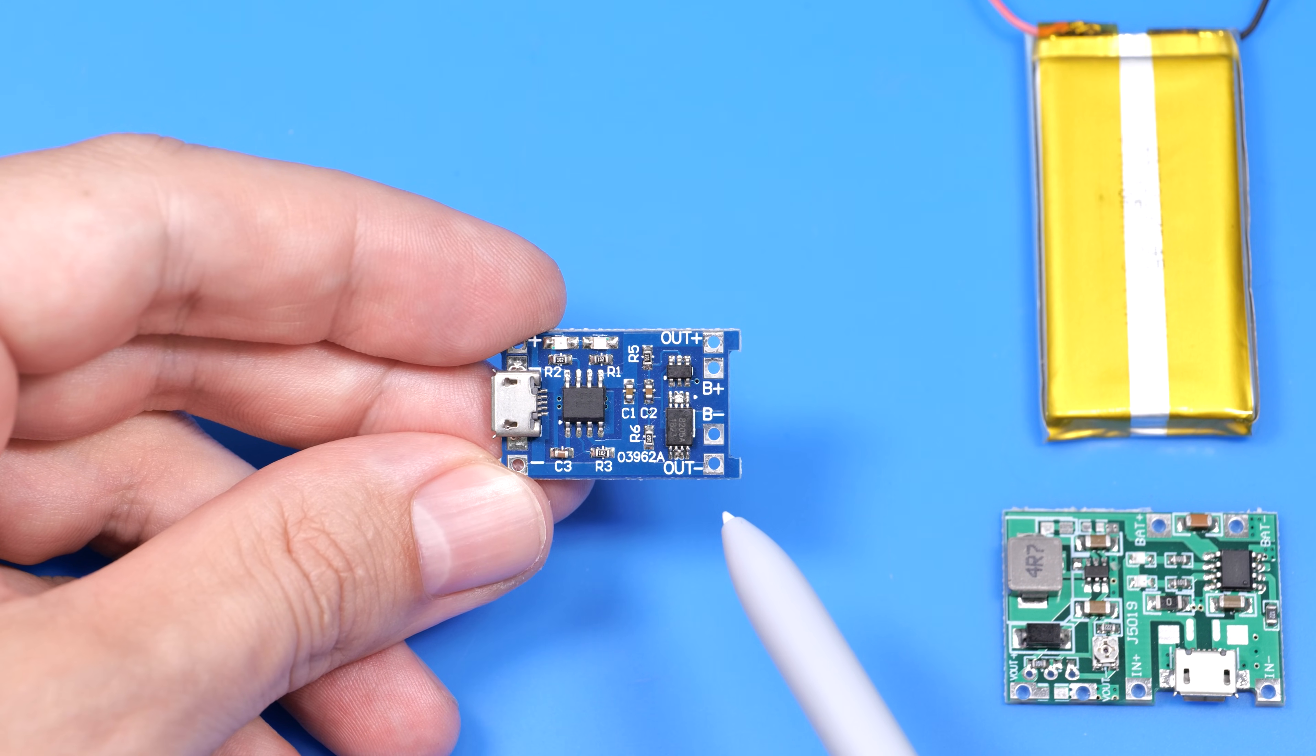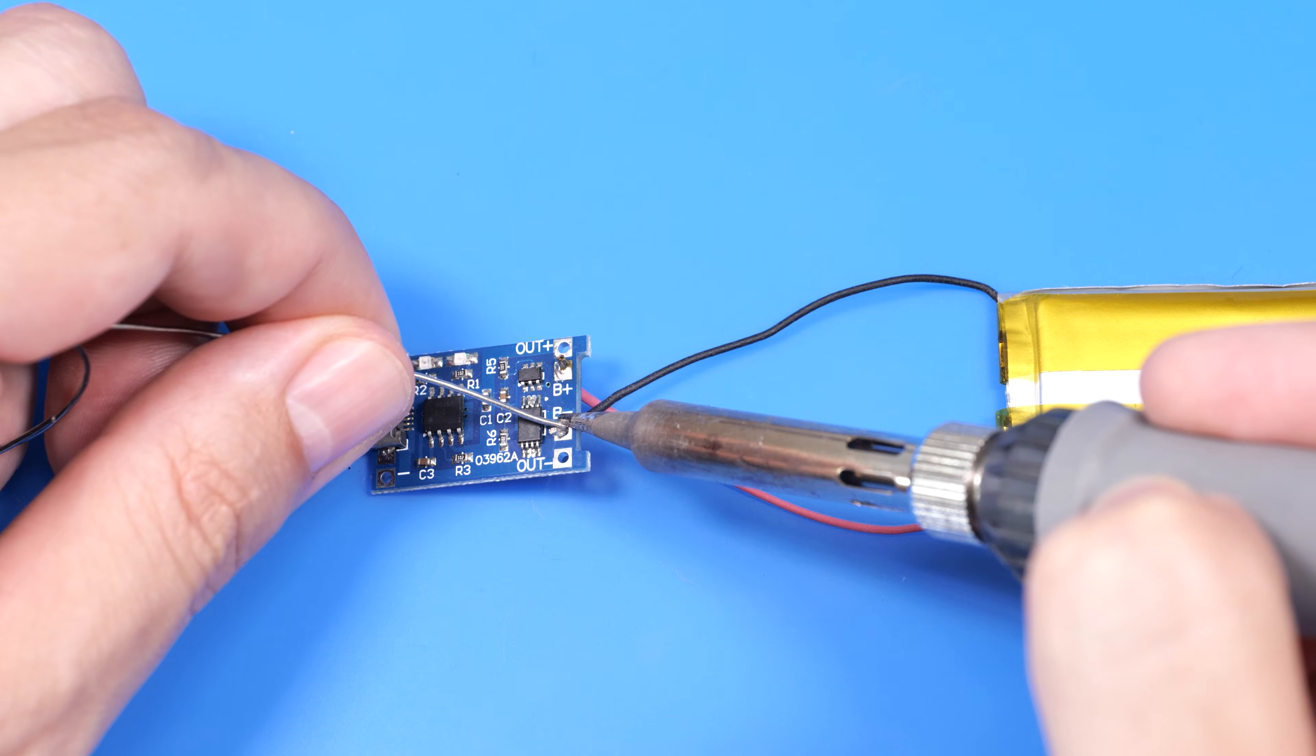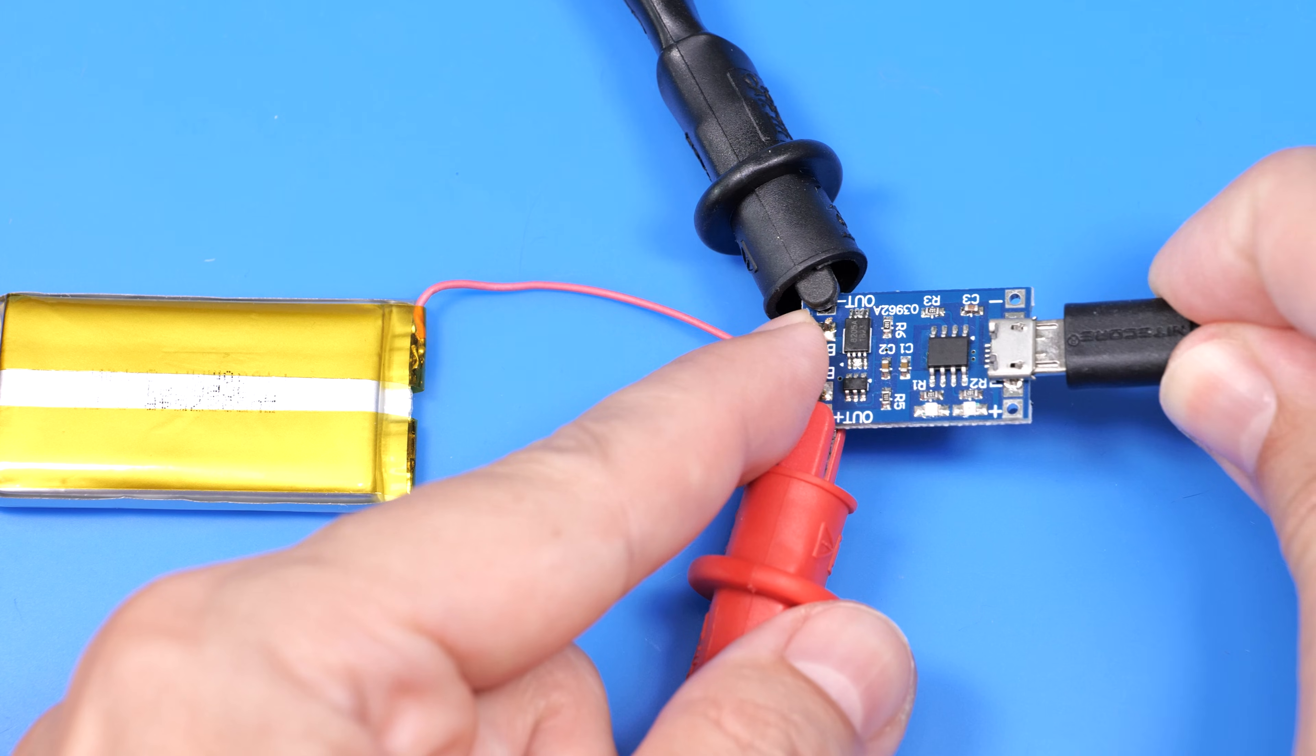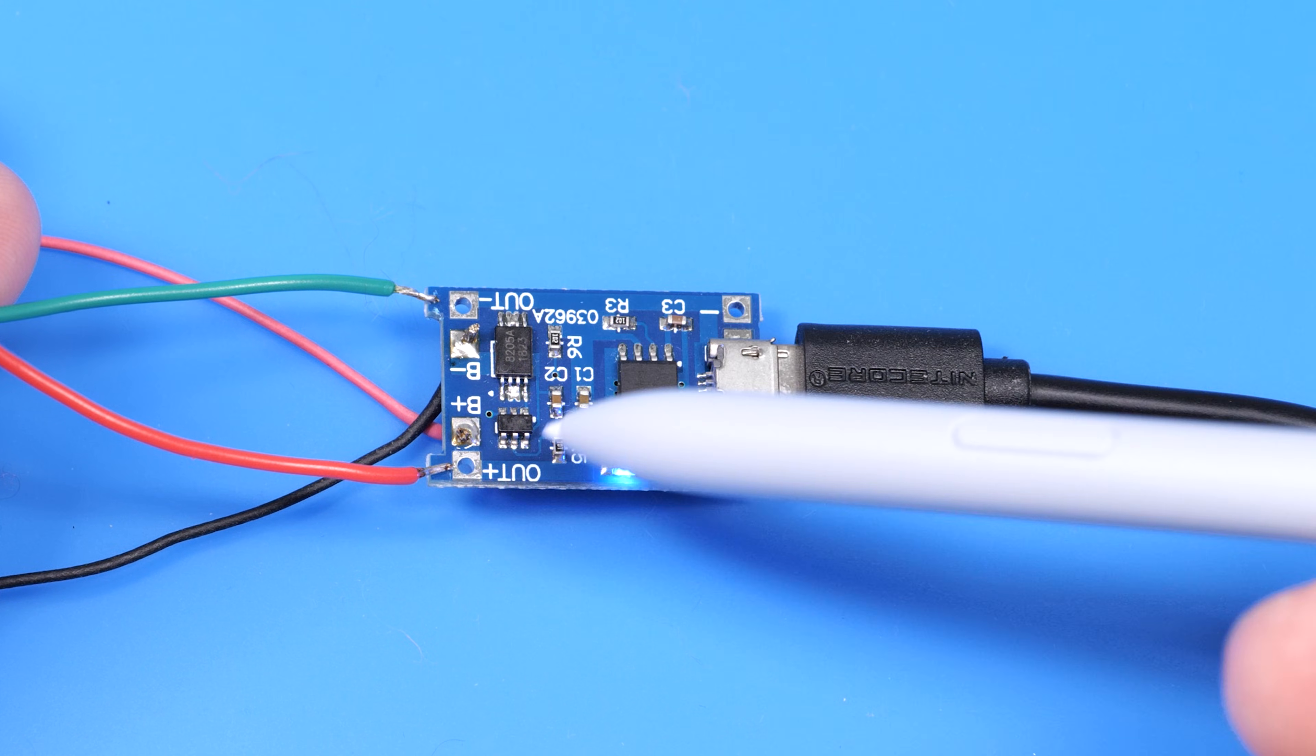This little board is a charge controller that costs just a couple of bucks. All you have to do is solder the battery to these terminals, like so, and you can start charging right away. And these terminals are where you connect your load.